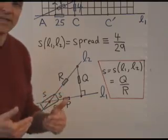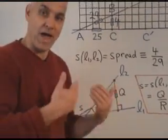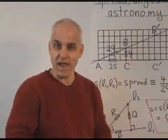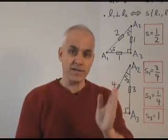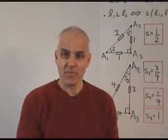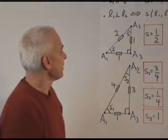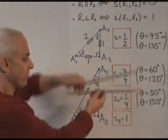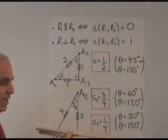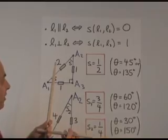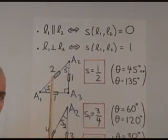All right, now let's have a look at some examples of how these spreads arise in a bunch of natural situations. The spreads that arise in a lot of natural situations are sometimes quite simple. If two lines are parallel like this, then the spread between them is zero. If two lines are perpendicular, then the spread between them is one.